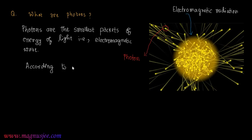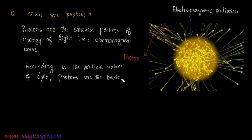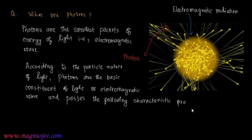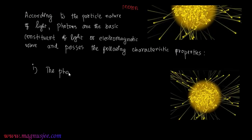According to the particle nature of light, photons are the basic constituents of light, electromagnetic radiation, or electromagnetic wave. Photons possess the following characteristic properties.